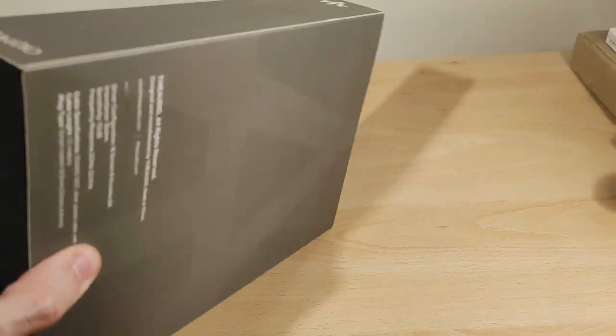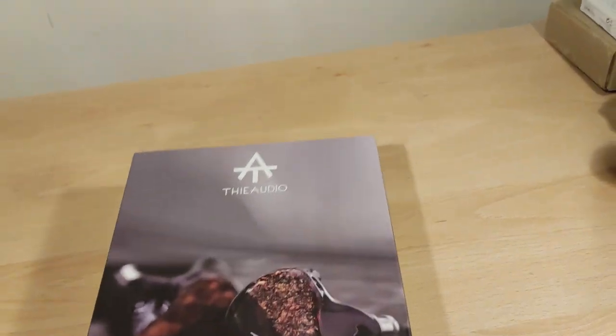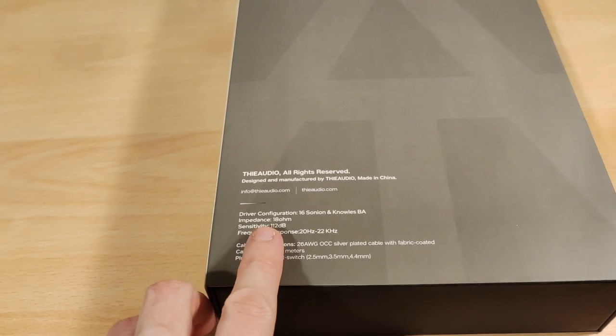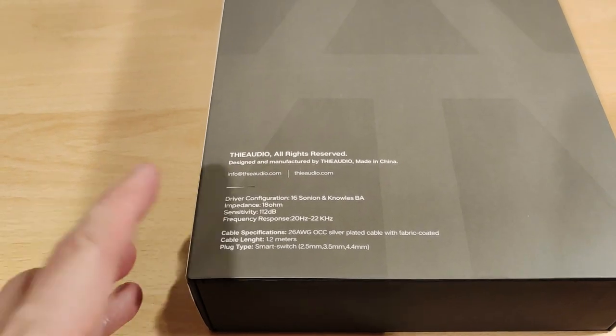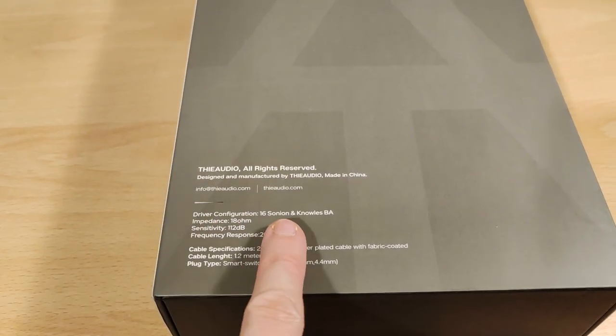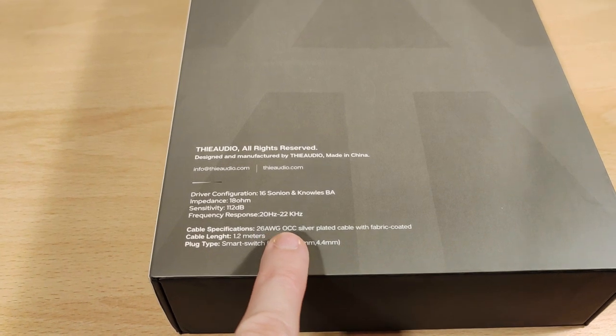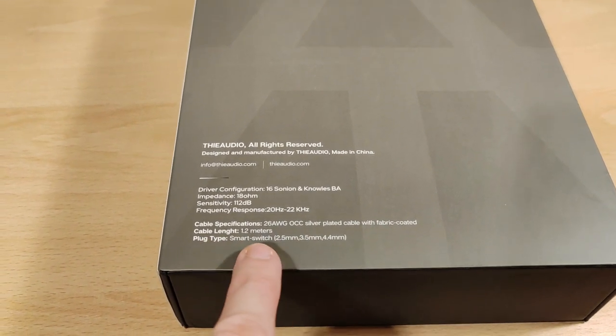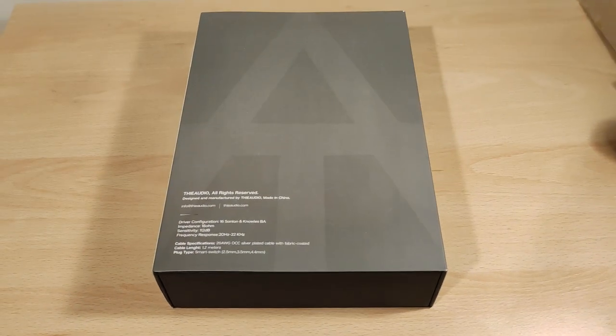Let's see what's inside. Not much on the packaging, but it's quite a big box. Some specs here: 18 ohm impedance, sensitivity is 112 dB. I found these quite easy to pair up. 16 balanced armatures per side with cable length and interchangeable plug types, which is kind of cool.